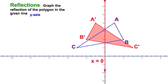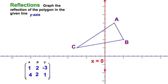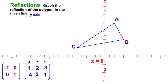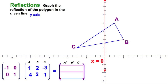Let's go back to the original preimage for triangle ABC. The coordinates of A are (1, 4), B are (2, 2), and C are (-3, 1). Now we're going to do a matrix multiplication using the transformation matrix for reflecting across the y-axis. All we have to do is perform the multiplication and we'll get the image.